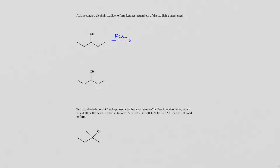Secondary alcohols are always oxidized to form ketones, and this is independent of the oxidizing agent used. If we oxidize with PCC we get a ketone, and if we oxidize with potassium dichromate and aqueous sulfuric acid we also get a ketone. Ultimately, there's no reason to use the harsh conditions of potassium dichromate — you could just use PCC, which is much easier to obtain and much more friendly to use.